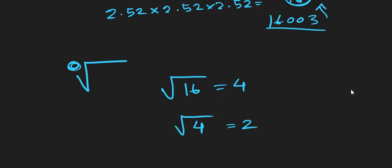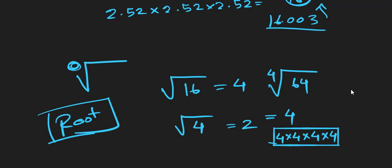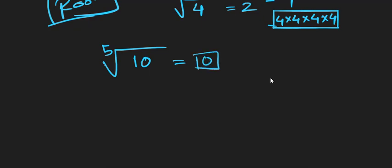If I want to find out the fourth root of a particular number — for example, the fourth root of 64 — the result is 4. It means we have to multiply 4 four times to get 64. So this is actually the inverse operation of exponent; we call it root. This is one of the very common math operations we will be doing in algebra.